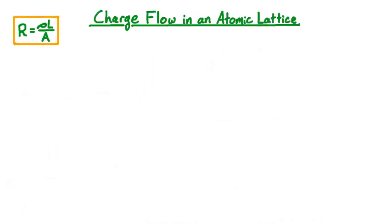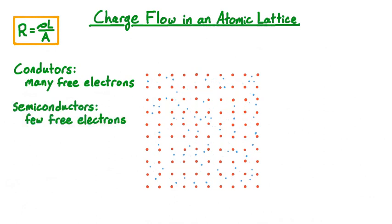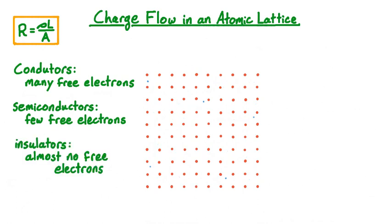Now let's look at how charge might actually flow through a material to understand how the material can oppose that flow. We'll model a typical solid as a lattice of atoms — a regularly spaced array of nuclei surrounded by electrons. In this picture, we've represented the nuclei by larger red dots and the electrons by smaller blue dots. Most of the electrons are actually bound quite closely to the nuclei, but some of the electrons are free to move around inside of the lattice. In conductors, there are typically many such free electrons, often several per atom. For semiconductors, specifically around room temperature, there are still some free electrons, but far fewer than there are in a typical conductor. In insulators around room temperature, there are almost no free electrons, perhaps only one for every several atoms.